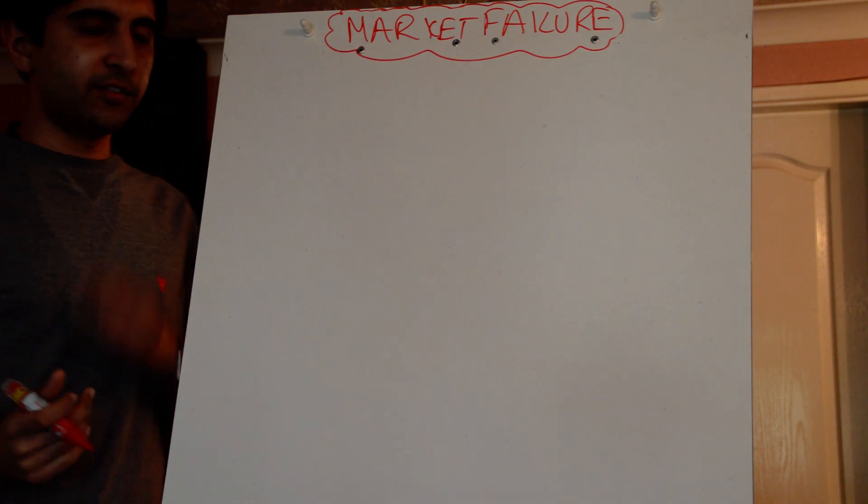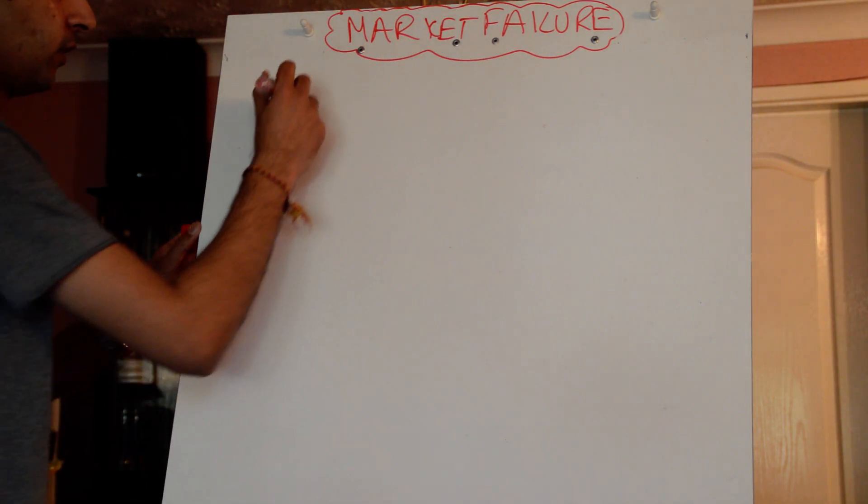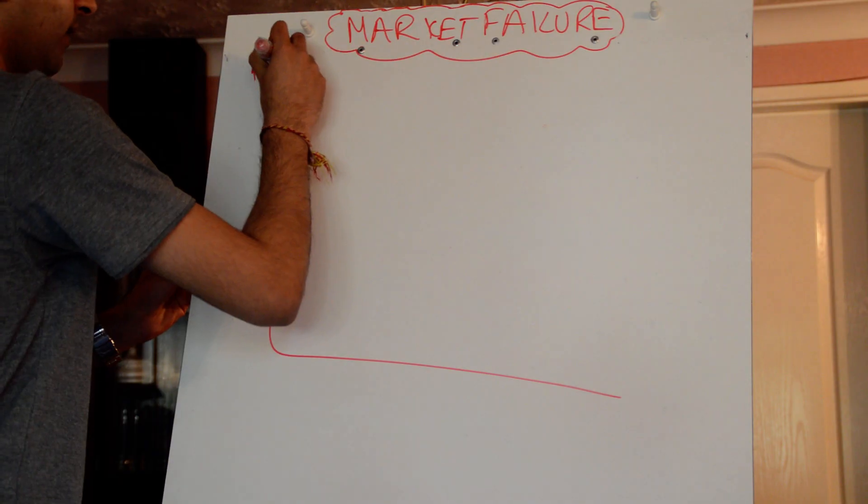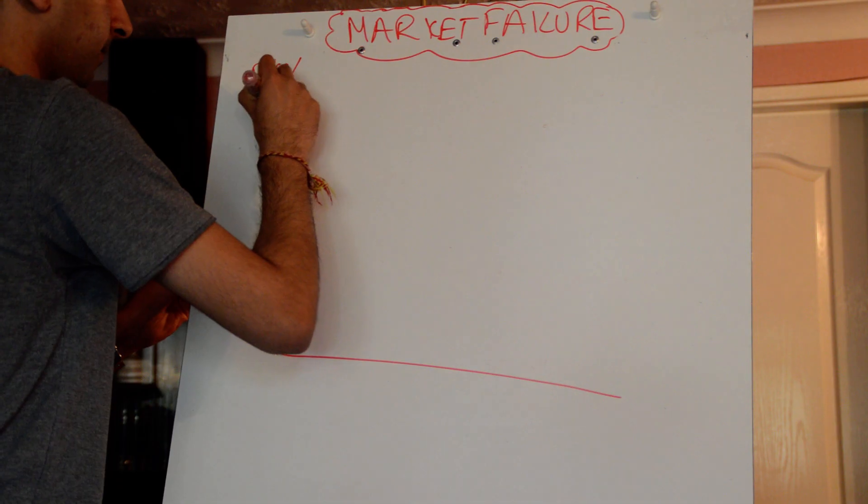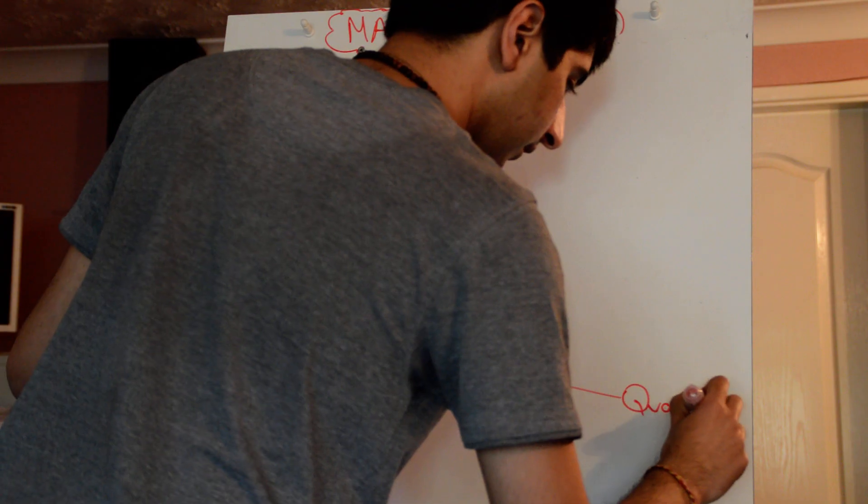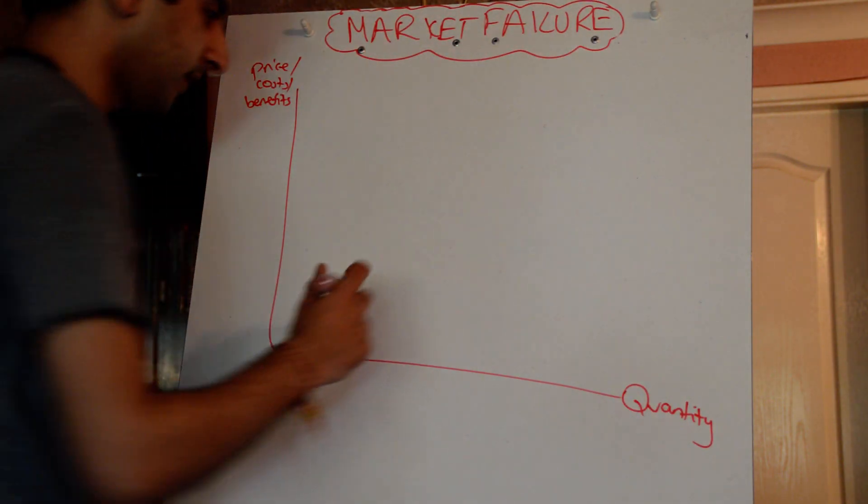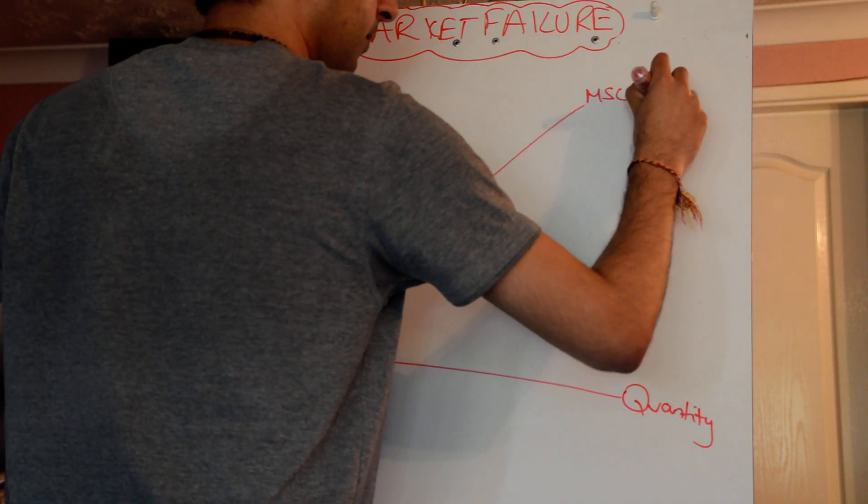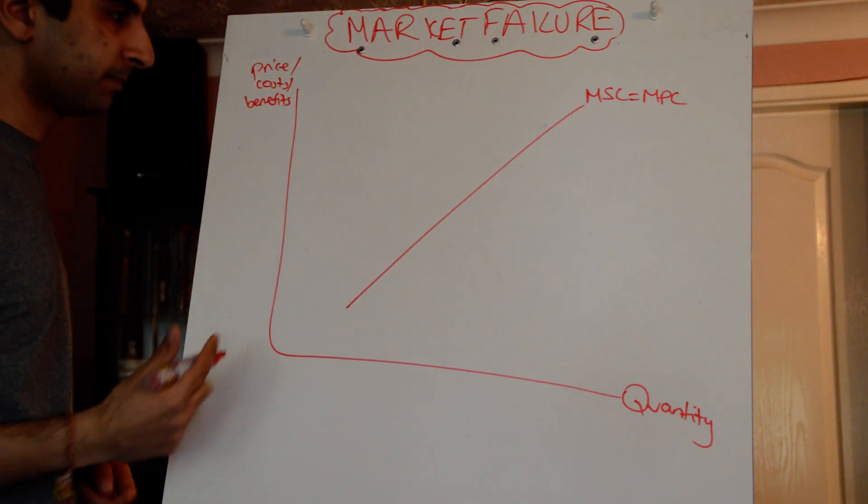So whenever we talk about positive externalities and merit goods, we need to know the diagram for it again. Let me just quickly go through the diagram. On the y-axis we've got price, costs and benefits, and quantity on the x-axis. Now we're assuming no negative externalities, so the marginal social cost equals the marginal private cost because there are no negative externalities.